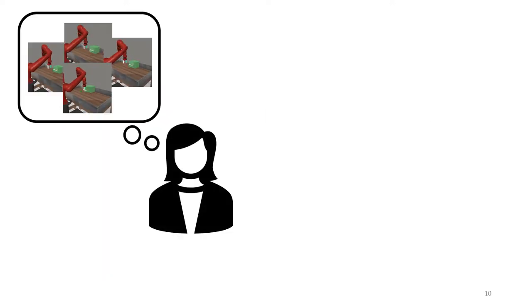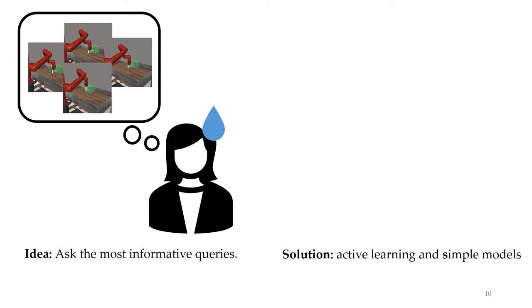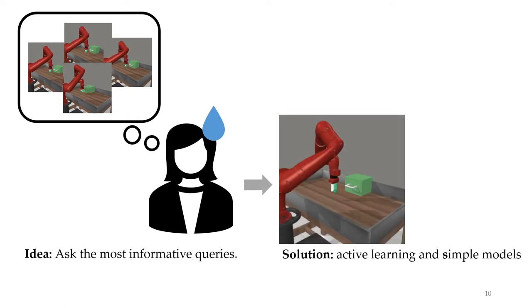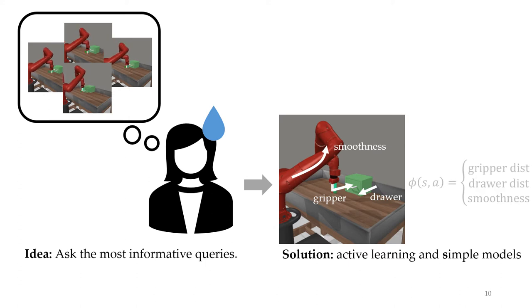There are tons of potential behaviors we might want to see and consequently tons of potential queries to ask. To address this problem, we might try and ask the most informative questions. Prior works in active learning have done this using information-theoretic objectives and simple models. To do this, they first design some features on top of the state space like gripper distance, the drawer's distance, and the general smoothness of the behavior.